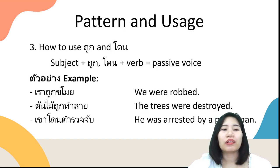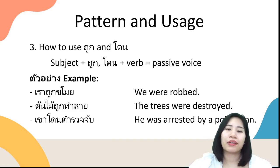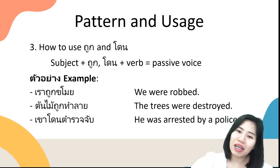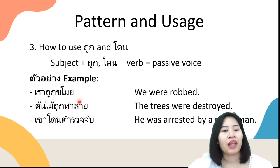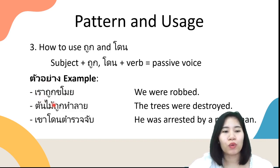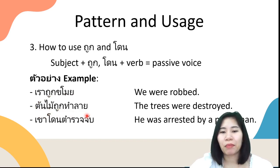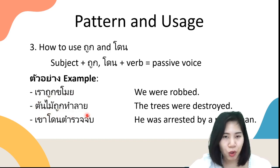How to use ถูก and โดน to turn sentences into passive voice. Examples: เราถูกขโมย — we were robbed. ต้นไม้ถูกทำลาย — the trees were destroyed. ทำลาย means destroyed.